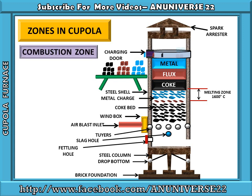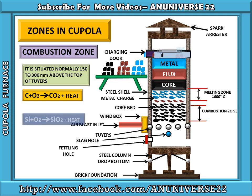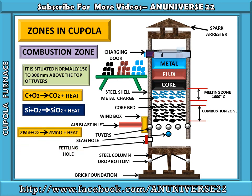Next zone is the combustion zone. The combustion zone is located normally 150 to 300 mm above the top of the tuyeres. The reactions taking place in the combustion zone are: C + O2 → CO2 + heat; Si + O2 → SiO2 + heat; 2Mn + O2 → MnO2 + heat; Fe + O2 → FeO + heat. Basically, heat is evolved in this zone because of these oxidation processes.